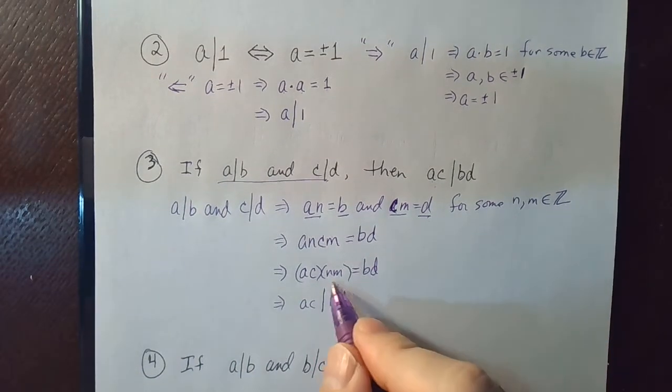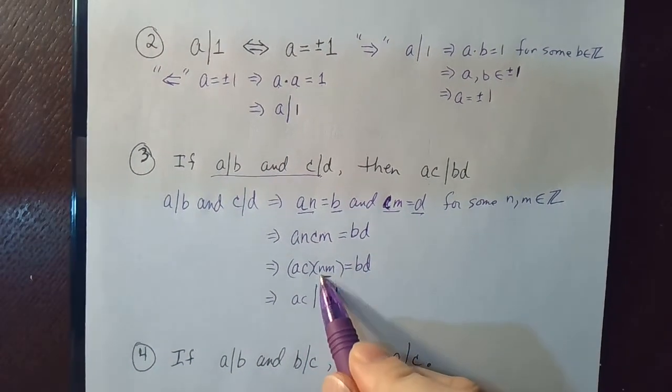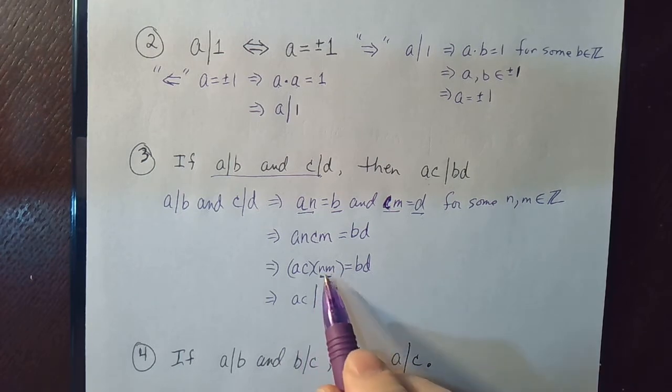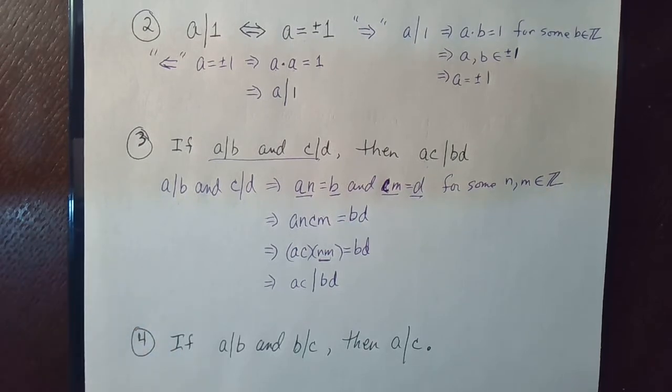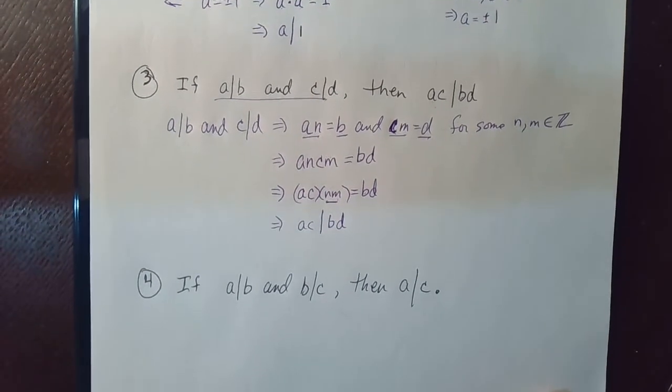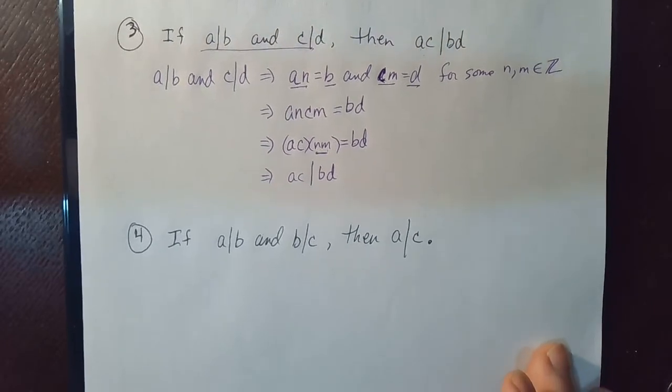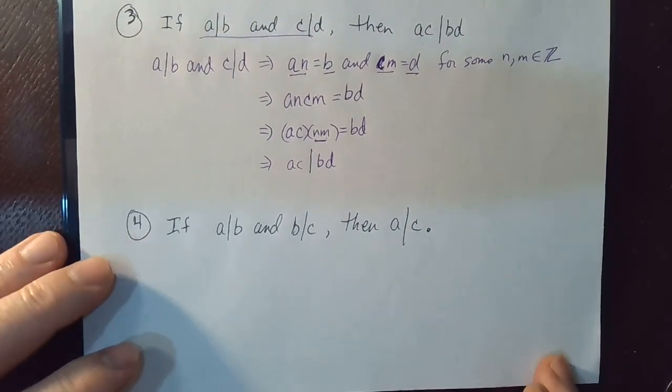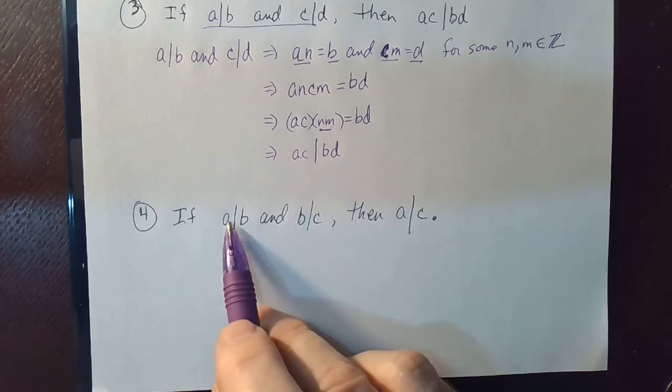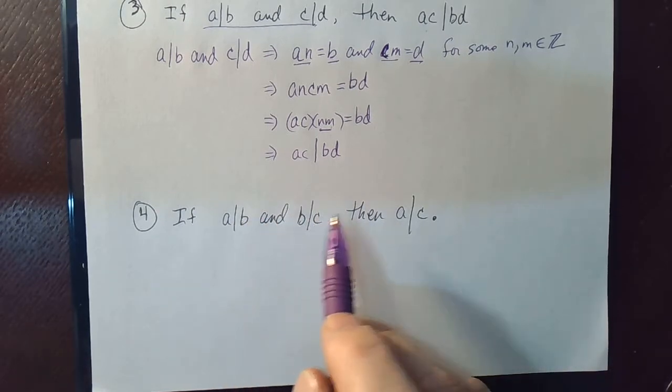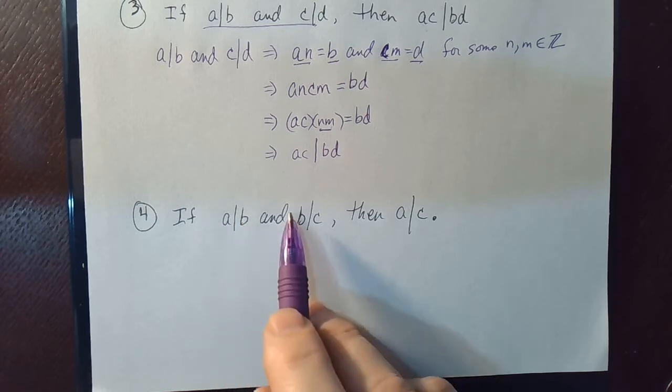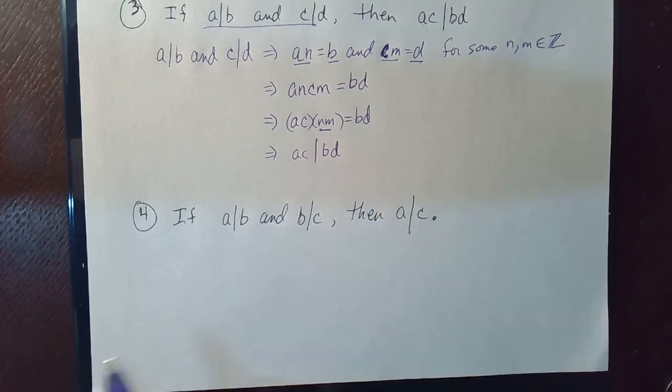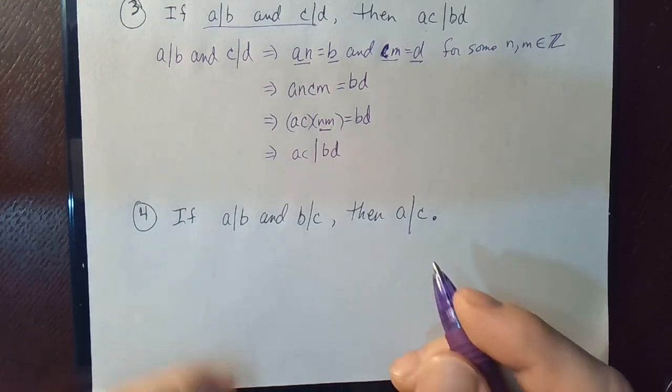Because a, c times this integer, obviously if n and m are both integers, then n times m is also an integer. So, pretty simple proof. Number four, this is kind of like a transitive property. If a divides b and b divides c, then a divides c. Or if a goes into b and b goes into c, then a goes into c.